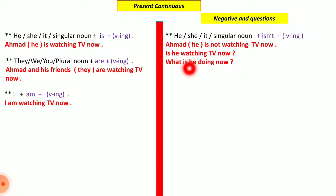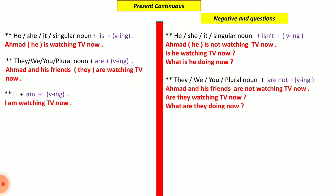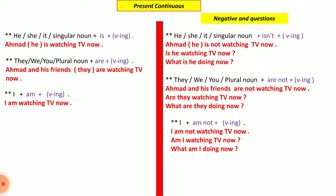For wh-questions: 'What is he doing now?' — same idea: swap subject and helping verb, add the question word before. For plural subjects: 'Ahmed and his friends are not watching TV.' For yes/no questions: 'Are they watching TV?' For wh-questions: 'What are they doing now?'